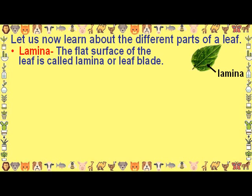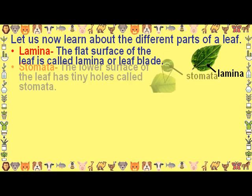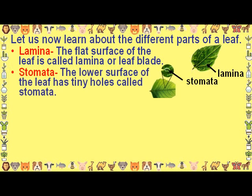The flat surface of the leaf is called the lamina, or leaf blade. The lower surface of the leaf has tiny holes called stomata.